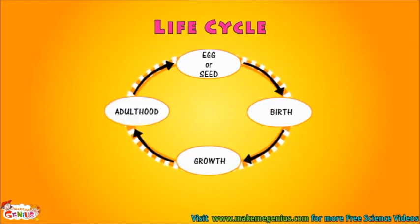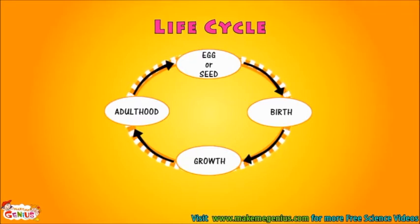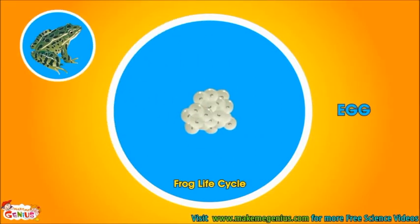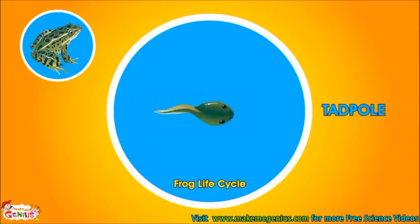When a plant or animal reaches young age, they can make babies. Some animals, like frogs and insects, have a little more complicated life cycle.